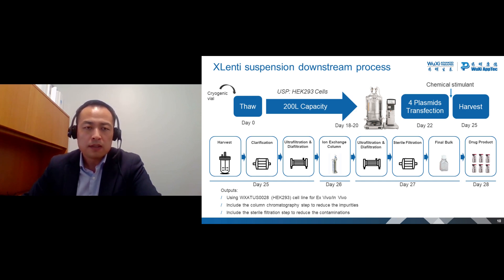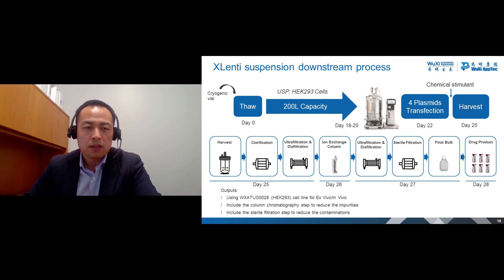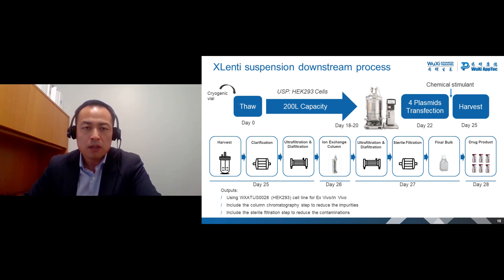Here, I use a 200-liter run as an example to walk you through the whole process. After cell thaw and expansion, Xlenti cells will be seeded in a 200-liter single-use bioreactor for transfection. Then chemical stimulants will be added to transfected cells to stimulate lentiviral vector production. After harvest, the cell suspension will be passed to downstream for purification. The downstream process can be adjusted based on client projects and purpose — for ex vivo or in vivo. For example, cell suspension can be clarified and concentrated, then column chromatography can be used to reduce impurities. After TFF, the material can be sterile filtered to remove contaminations. Finally, the drug product can be filled in vials. The whole process takes about 28 days.